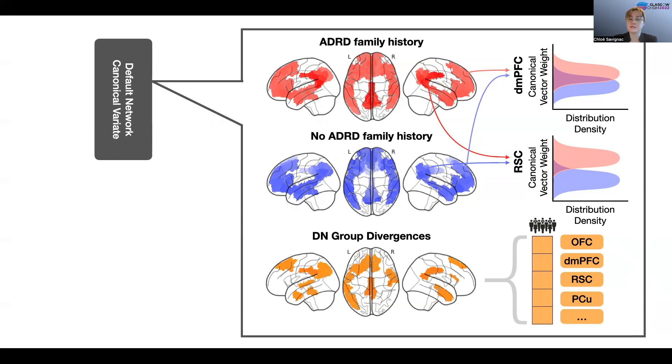The proportion of Alzheimer's disease proxy cases in our sample was 25%. These proxy cases were determined based on self-reported maternal or paternal history of Alzheimer's disease and related dementia, what we call ADRD. We can next zoom in on how hippocampus and default network divergence are distributed in each of the 25 modes of hippocampus default network covariation.